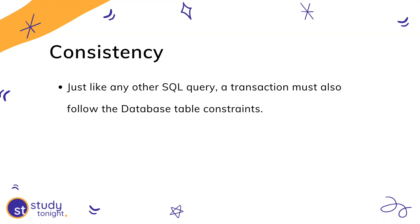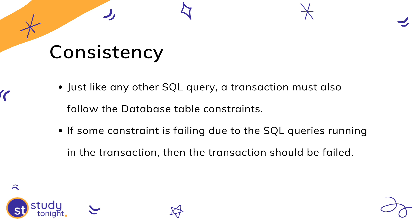C stands for Consistency. When a transaction is executed, it follows the database constraints like validations on table columns or relationships like foreign key, because if that is not followed, then the state of data may become inconsistent after running a couple of insert, update, or delete queries. So, a transaction must follow the constraints of the database.